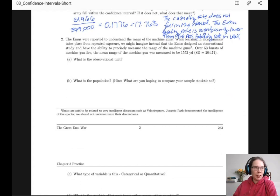On to part two of The Great Emu War. The emus were reported to understand the range of the machine guns. While learning in most animals takes place from repeated exposure, we might imagine instead that they designed an observational study and have the ability to precisely measure the range of the machine guns. Over 53 bursts of machine gun fire, the mean range was measured to be 1553 yards with a standard deviation of 204.74 yards. The observational unit here is a burst of machine gun fire.